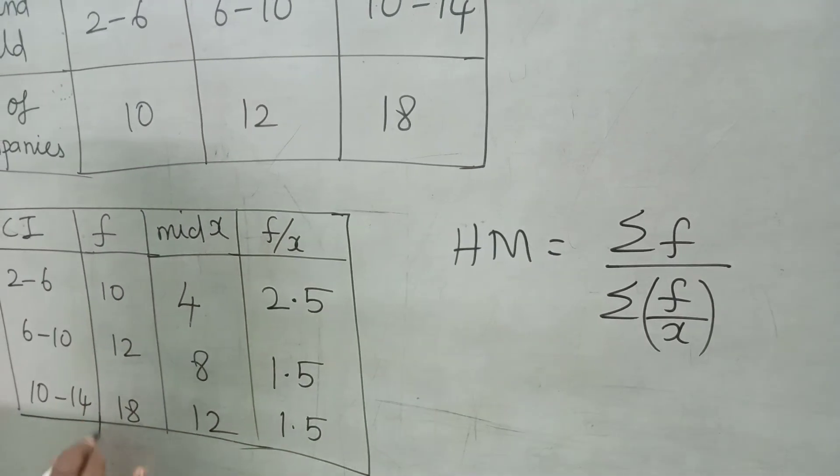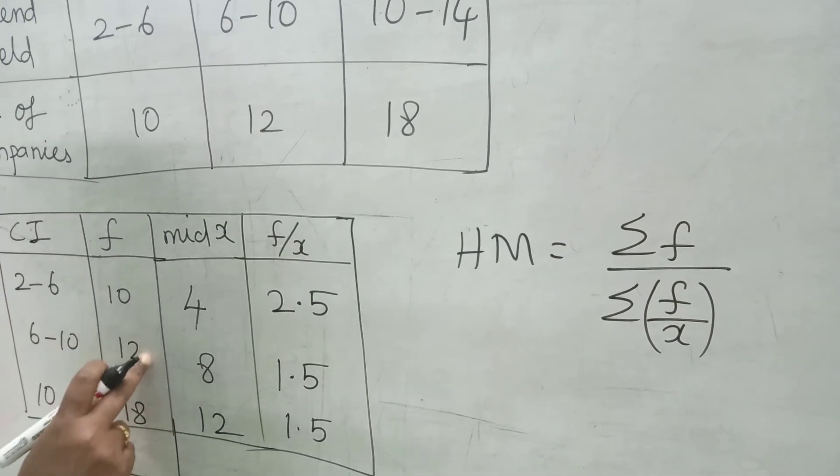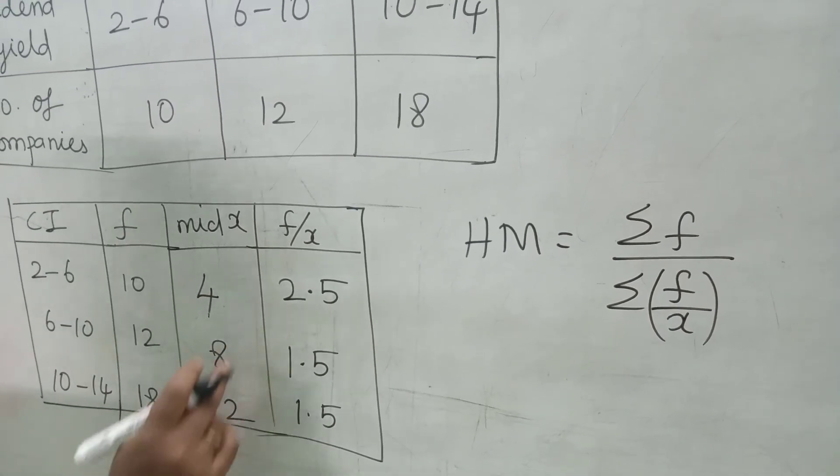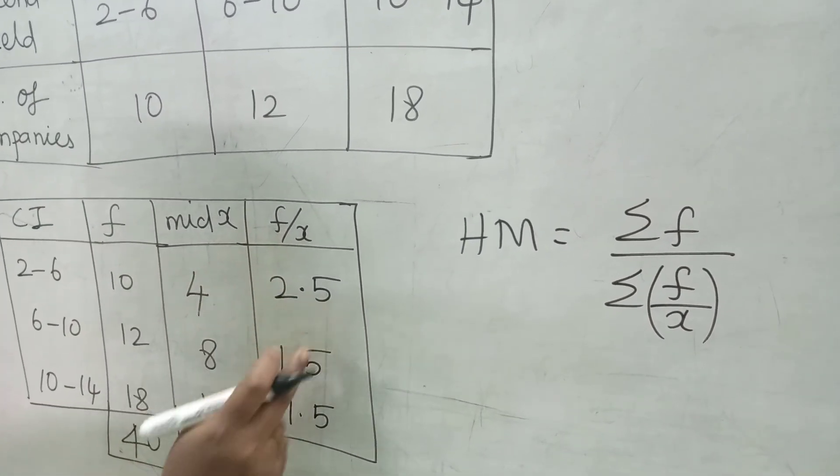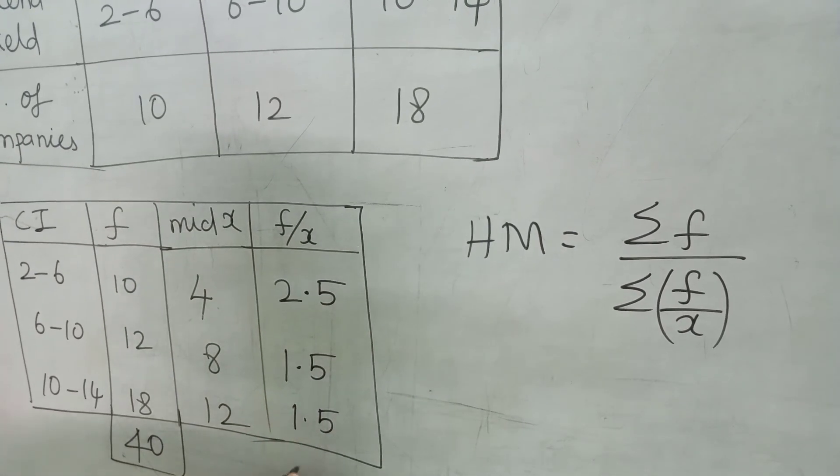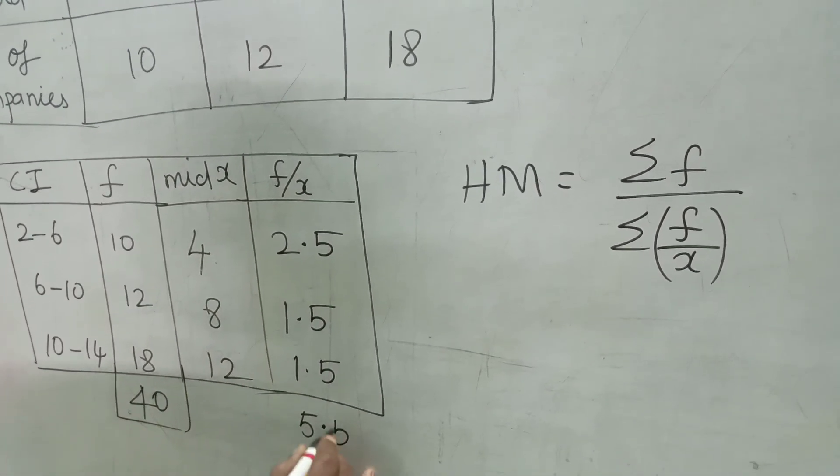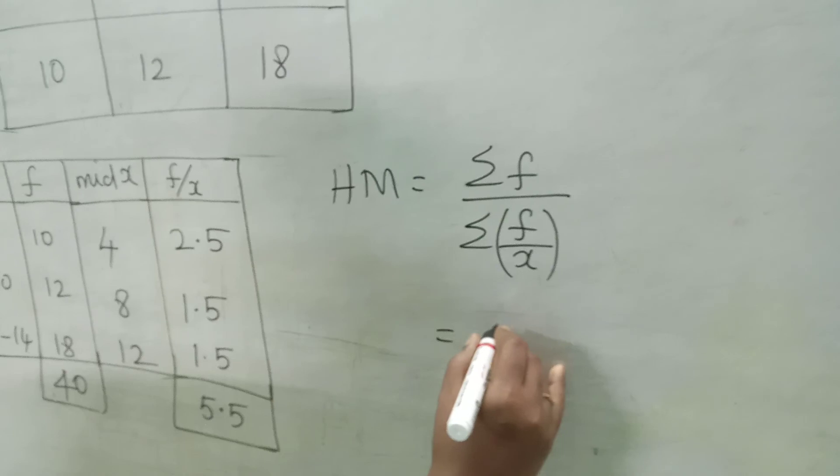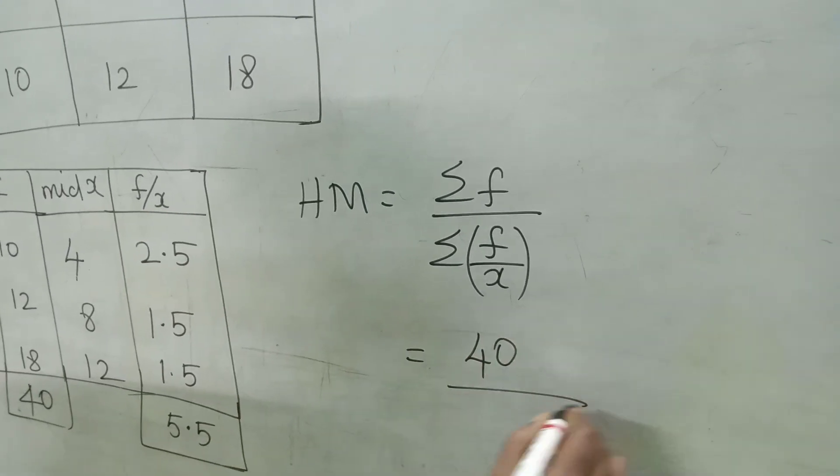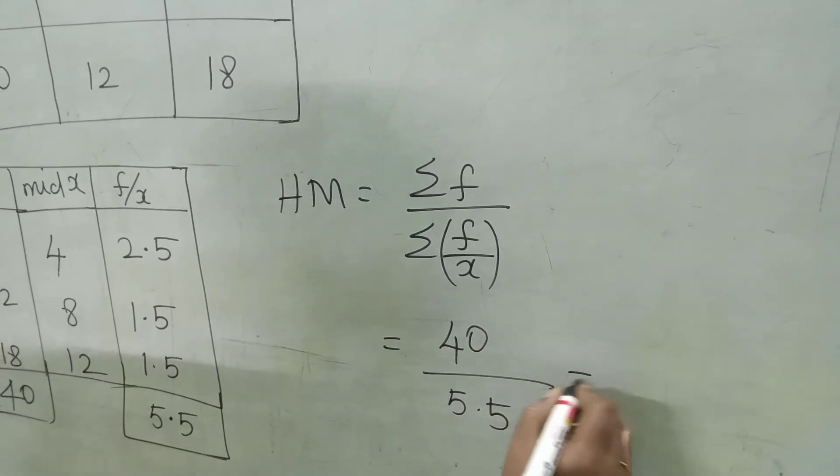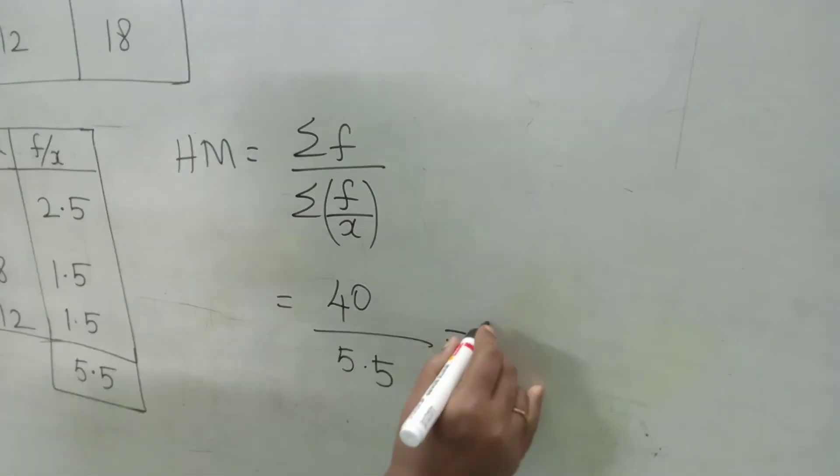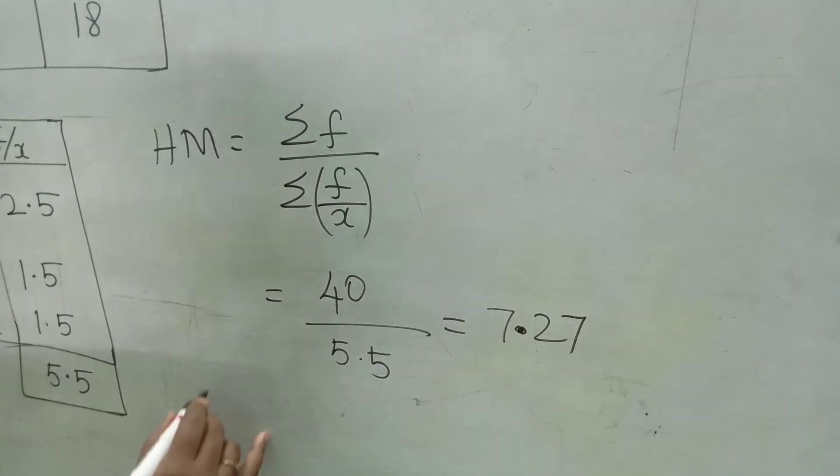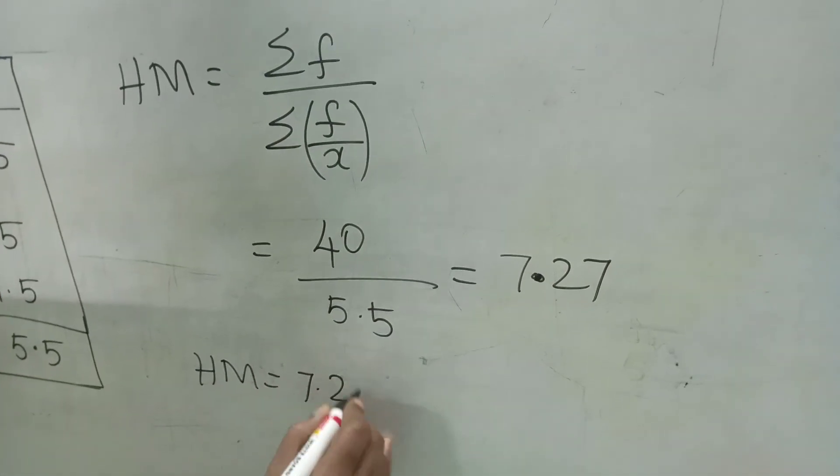Adding F column, 10 plus 12 plus 18, that is 40. Last column, sigma F by X. 2.5 plus 1.5 plus 1.5, that is 5.5. We substitute the value in the formula. Sigma F is 40. Sigma F by X is 5.5, which is equal to 7.27. Therefore, harmonic mean is equal to 7.27.